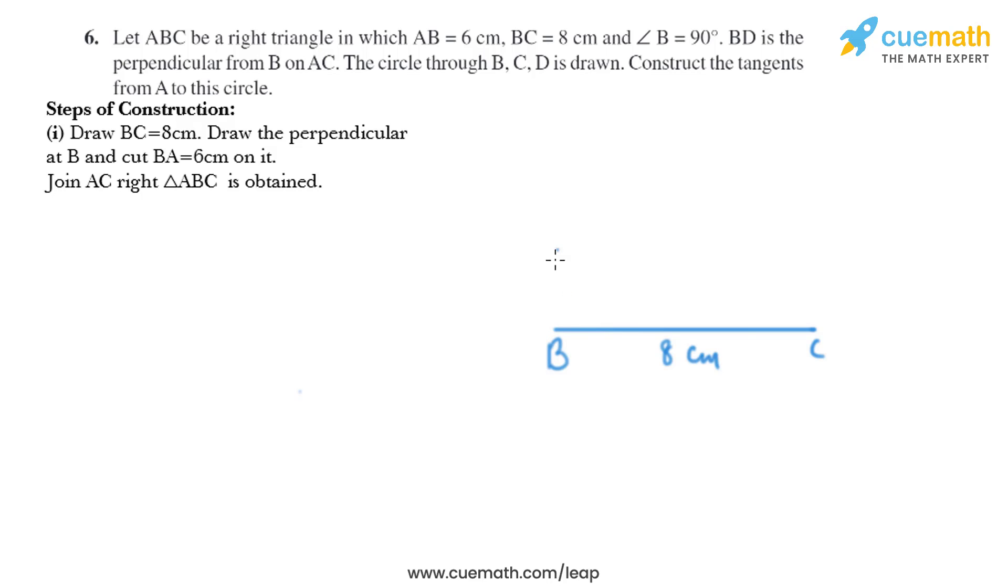We need to draw a perpendicular at B like this. Then we'll draw BA equals 6 cm on it. So we'll put the compass at B and measure the opening as 6 cm and draw an arc like this and mark the point of intersection as A. So BA is basically 6 cm and we'll join A and C. So we have got triangle ABC.